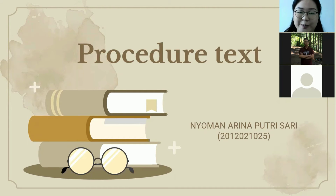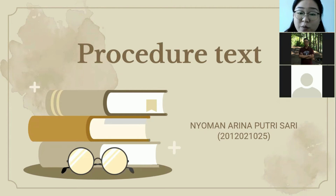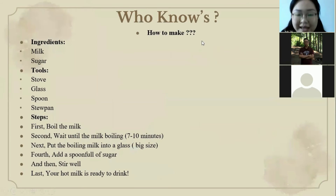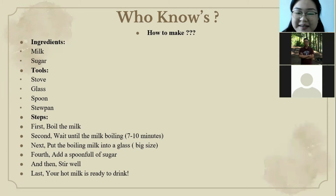Today we will learn about procedure text. Do you all know about this kind of text? A student answers: Procedure text is a text that explains how to do something in a sequence of actions. That's right! Procedure text also has a purpose — to explain how something can be done, such as directions, recipes, instructions, manuals, and so on. Now move on to the next page and read this procedure text. I'll give you three minutes to read this.